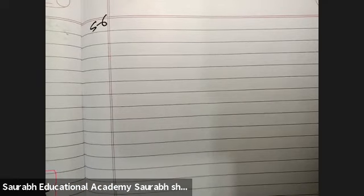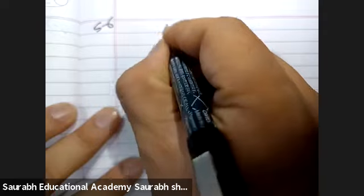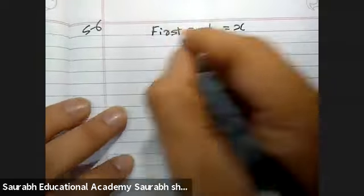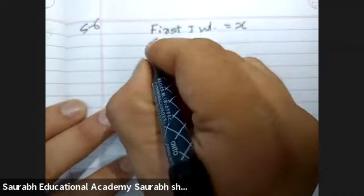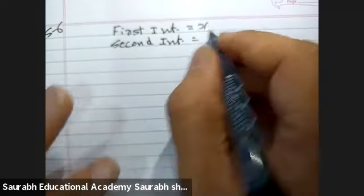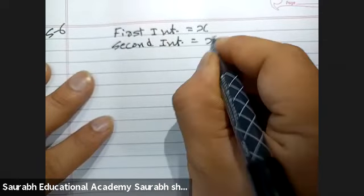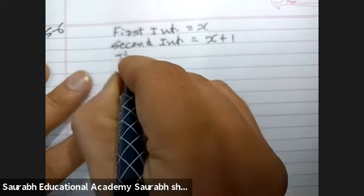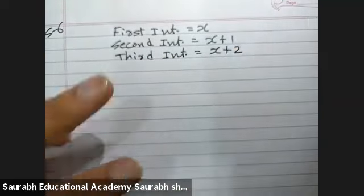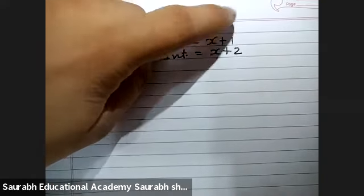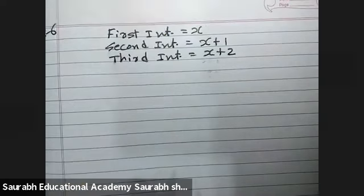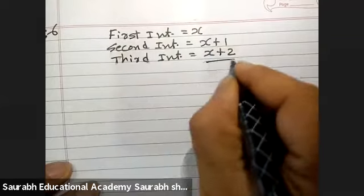Three consecutive integers add up to 51. Suppose first integer, we assume first number is x. Second integer will be x plus 1 and third integer equals x plus 2. We have to assume continuous numbers. For example, if it is 5, then next number is 6 and third number is 7.